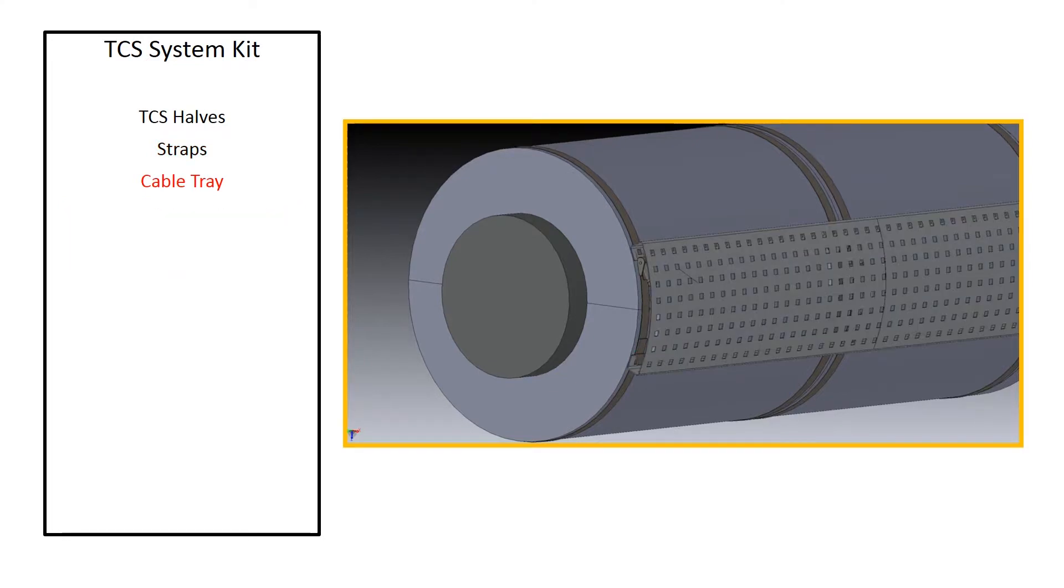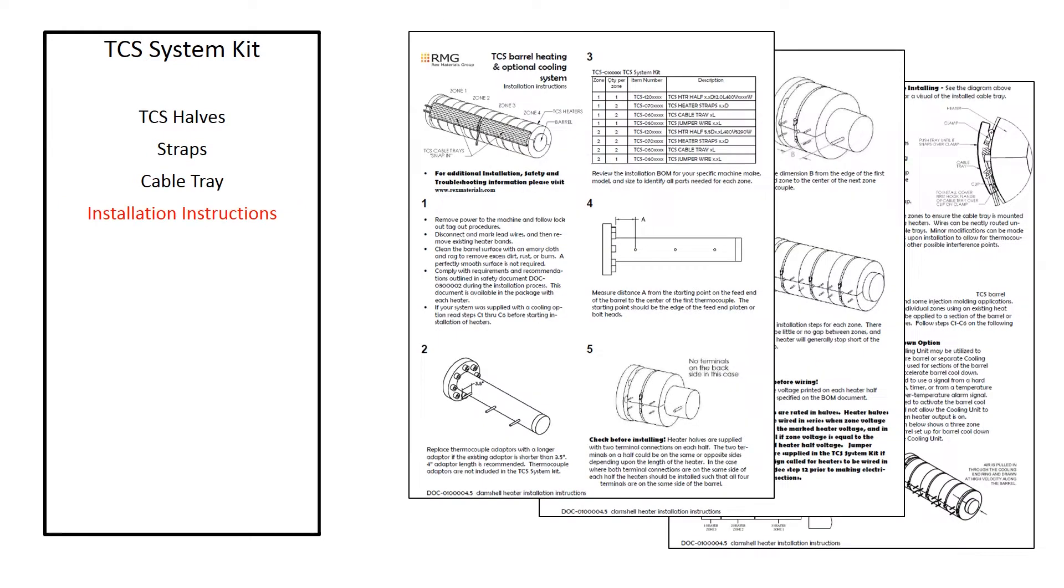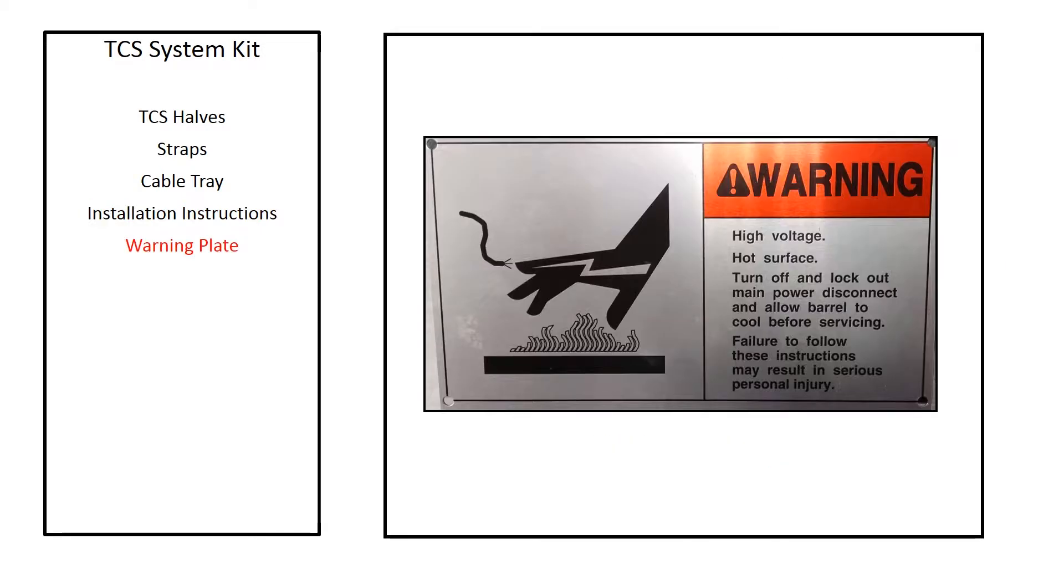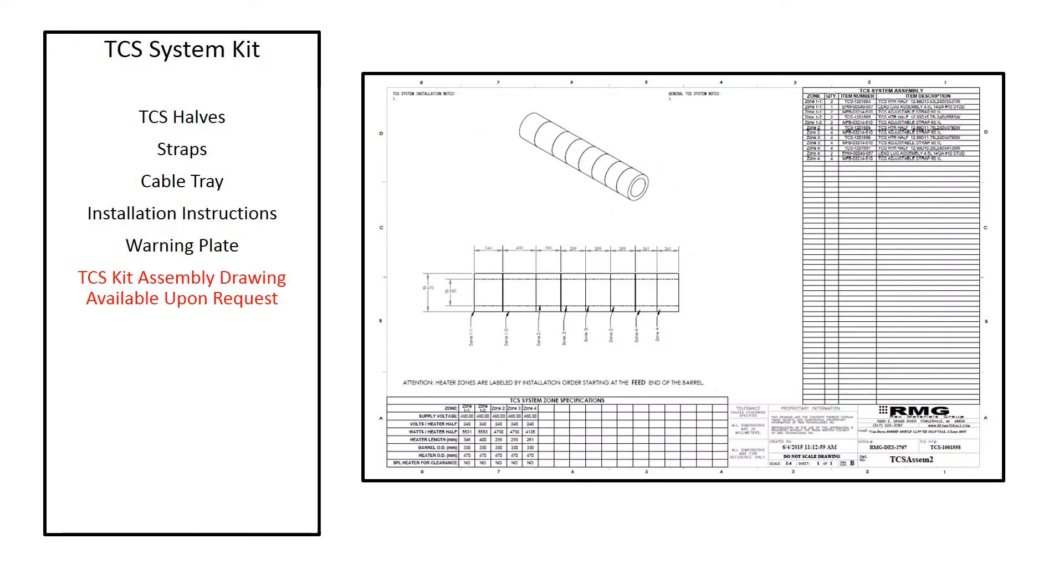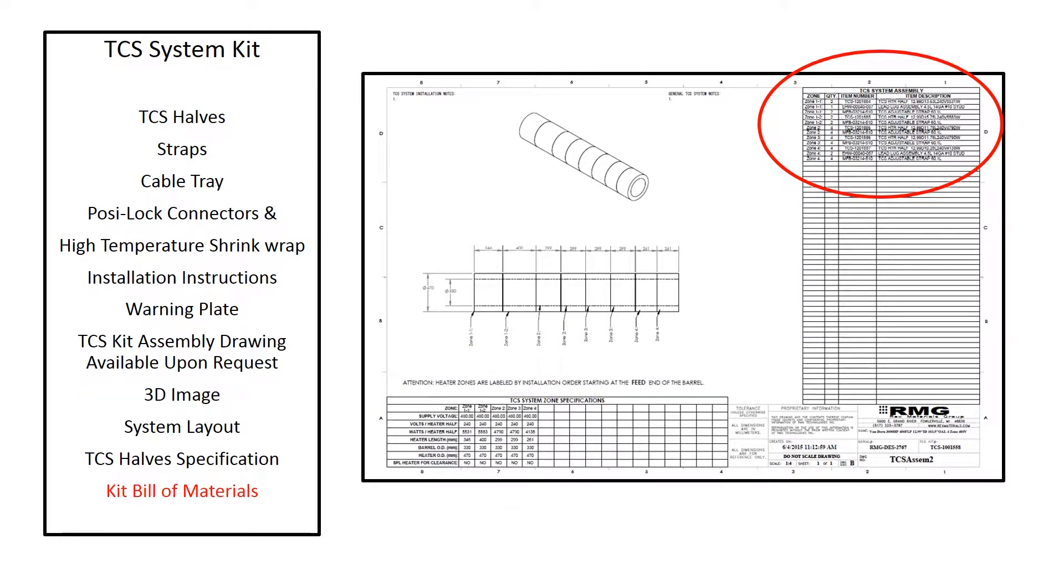The kit also includes installation instructions and a warning plate as well as assembly drawings which show a 3D image of the kit, system layout showing physical dimensions, the TCS half specifications such as voltage and power rating, and a kit bill of material.